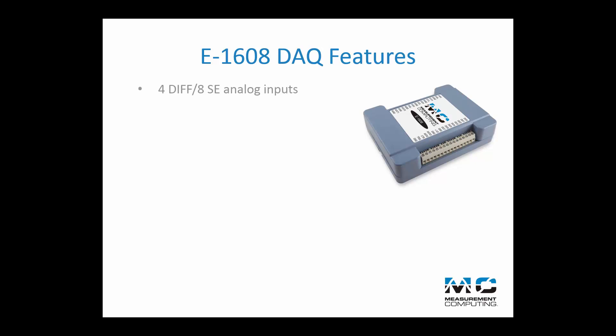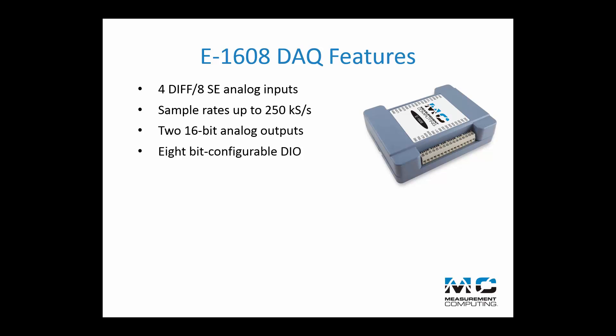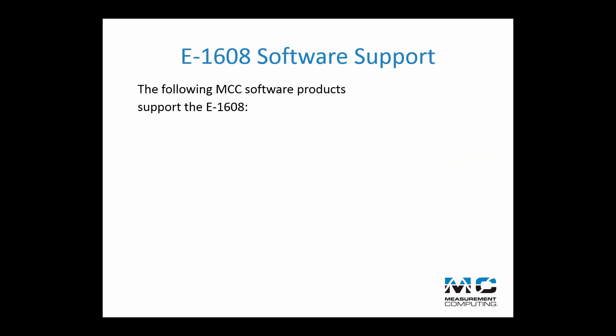The E1608 offers four differential or eight single-ended analog inputs, sample rates up to 250 kilo samples per second, two 16-bit analog outputs, 8-bit configurable digital I/O, and a 32-bit event counter input. The E1608 is supported by the following MCC DAQ software products.